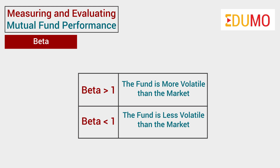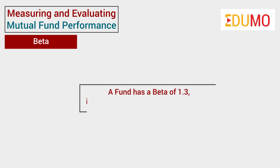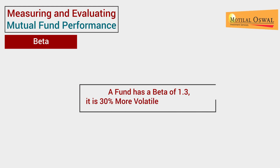For example, suppose a fund has a beta of 1.3. It is 30% more volatile than the market.